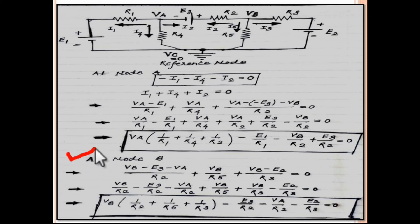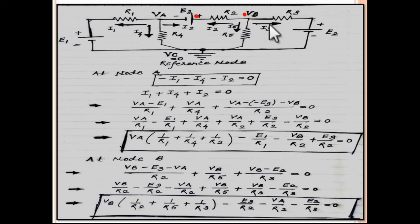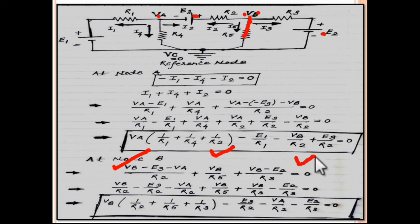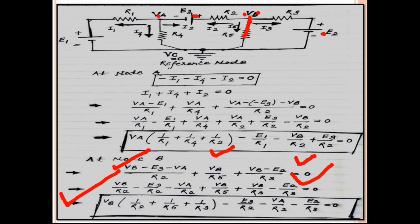At node b, taking all outgoing currents, the equation is: (vb − e3 − va)/r2 + vb/r5 + (vb − e2)/r3 = 0. Simplifying: vb(1/r2 + 1/r5 + 1/r3) − e3/r2 − va/r2 − e2/r3 = 0. You can now solve these two equations simultaneously to find va and vb.